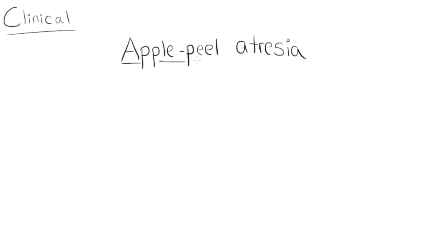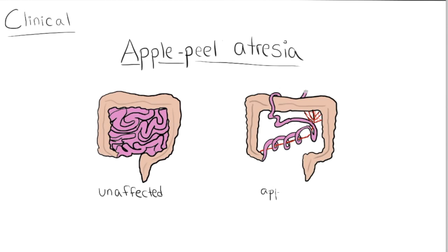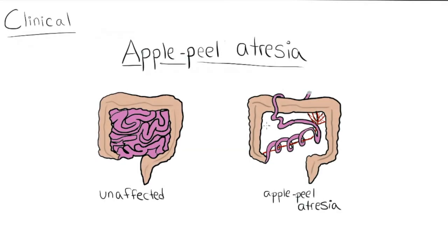Clinical features. Intestinal atresia is a phenomenon in which the intestines are not formed properly. This causes them to be missing sections or be significantly narrowed, sometimes to the point of completely lacking a patent or hollow interior.